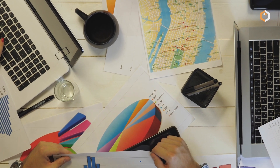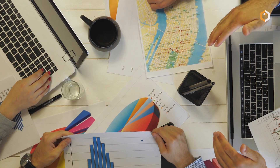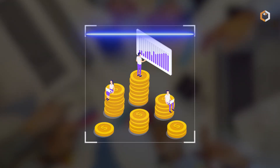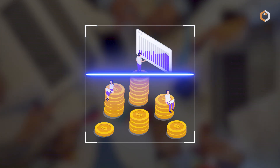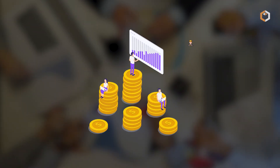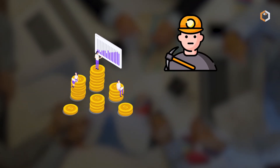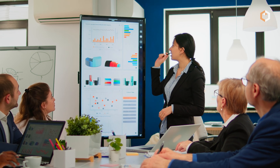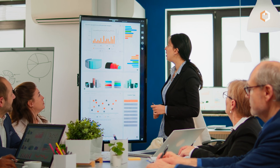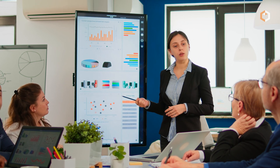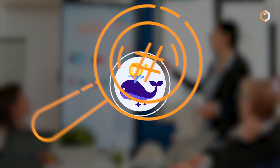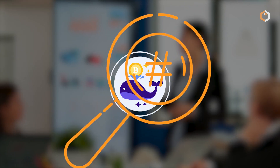One of the standout features of Glassnode is its ability to measure and analyze the behavior of market participants, such as holders, miners, and traders. It tracks the accumulation or distribution of coins by large holders, known as whales, and provides data on the sentiment and activity of these market participants.